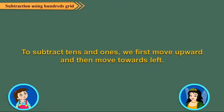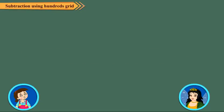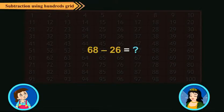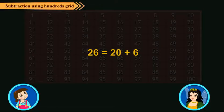And to subtract tens and ones, we first move upward and then move towards the left. Let us find 68 minus 26. 26 is 20 plus 6.